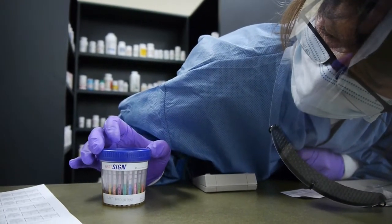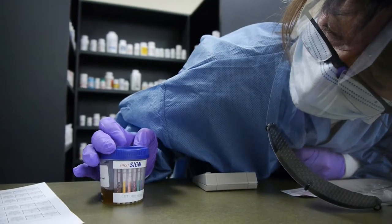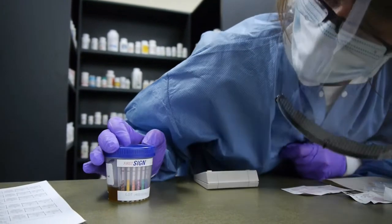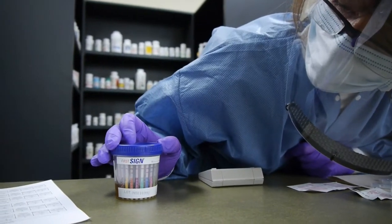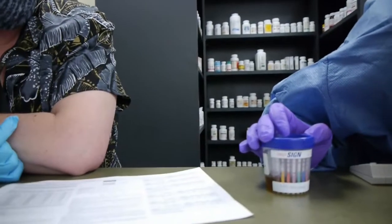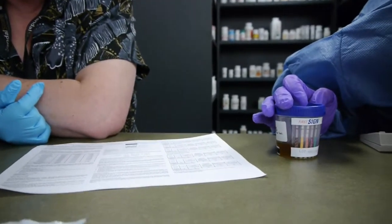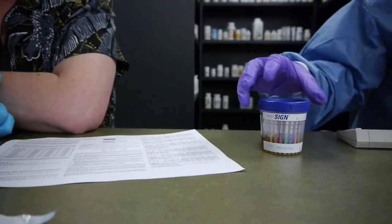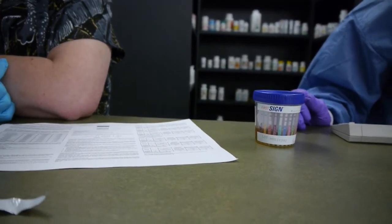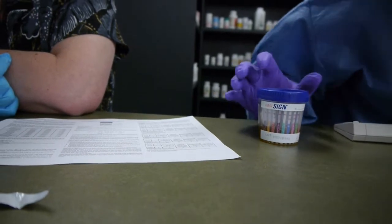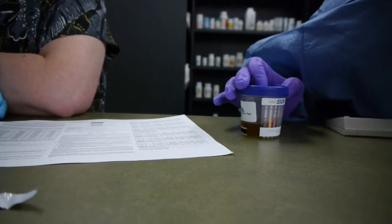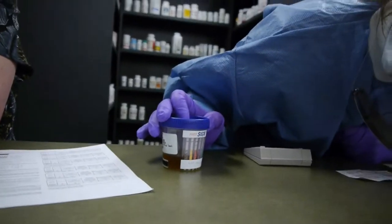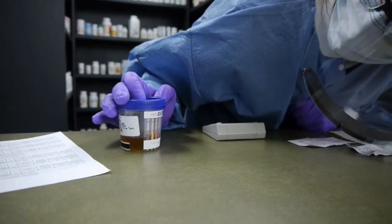Two lines is negative and one is positive. A control line needs to be there. If the test line is there, that's negative. If you have a control line but no test line, that means they're positive for that drug. Oxy is possibly positive.